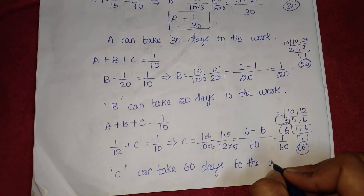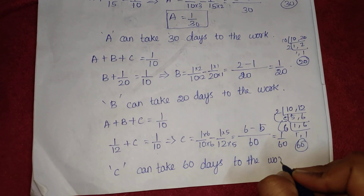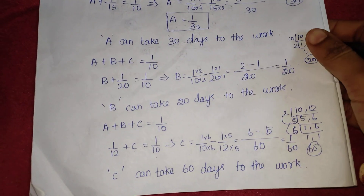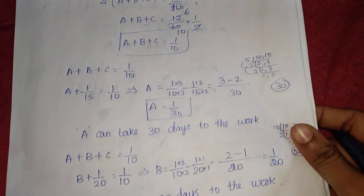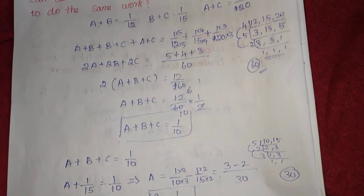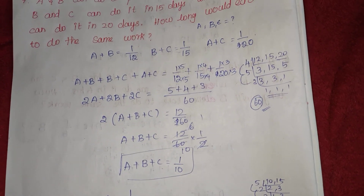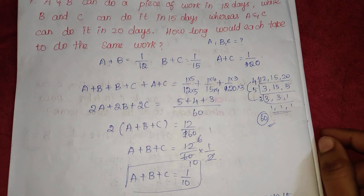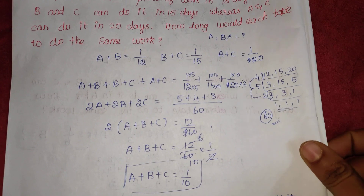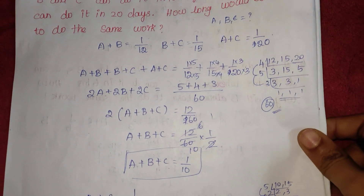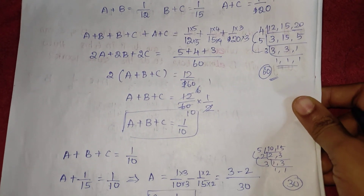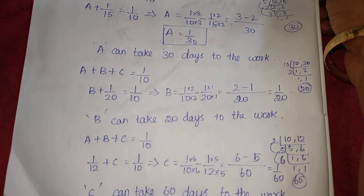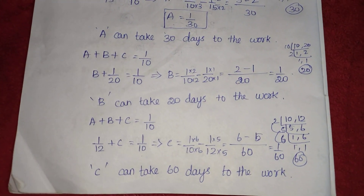So A, B, and C take 30, 20, and 60 days respectively to complete the same work. If you like this video, please like and comment. Please check the playlist in the description for all answers. Thank you.